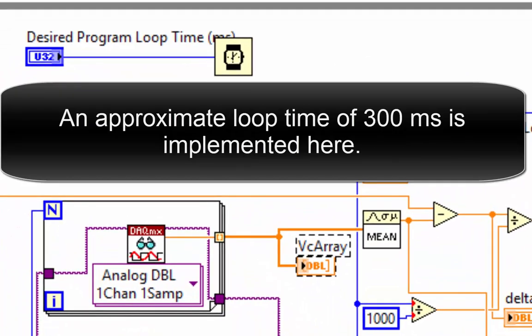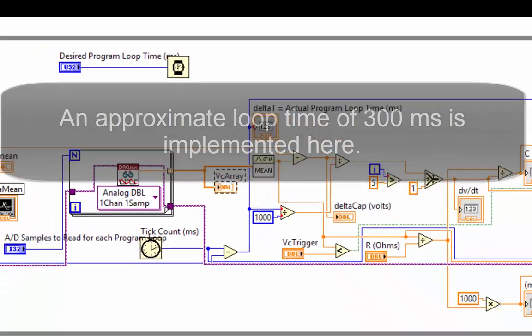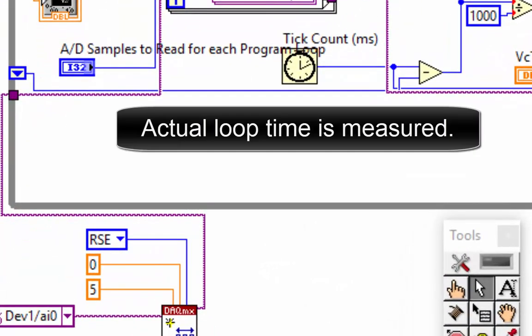An approximate loop time of 300 milliseconds is implemented here. Actual loop time is measured.